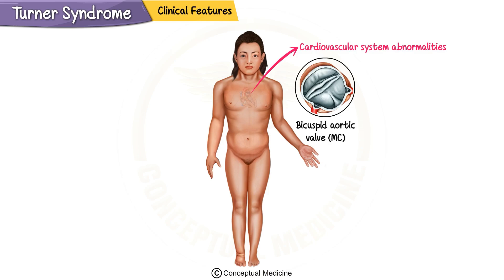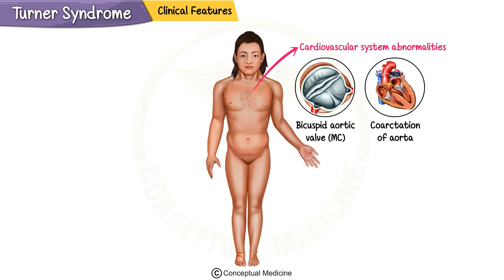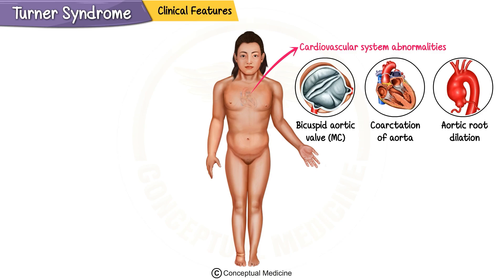Turner syndrome also affects the cardiovascular system. The most common cardiac abnormality is a bicuspid aortic valve, where the aortic valve has two leaflets instead of three. Another frequent finding is coarctation of the aorta, which causes a significant difference in pulse strength between the arms and legs. Patients are also at risk of aortic root dilation, which can lead to life-threatening aortic dissection. Lifelong cardiac monitoring with regular echocardiograms is essential.